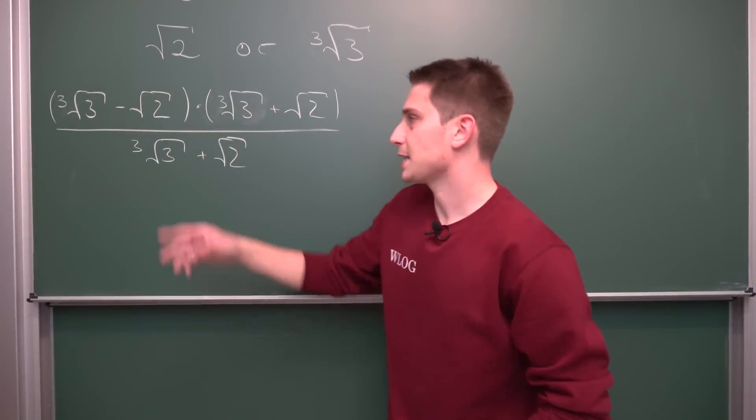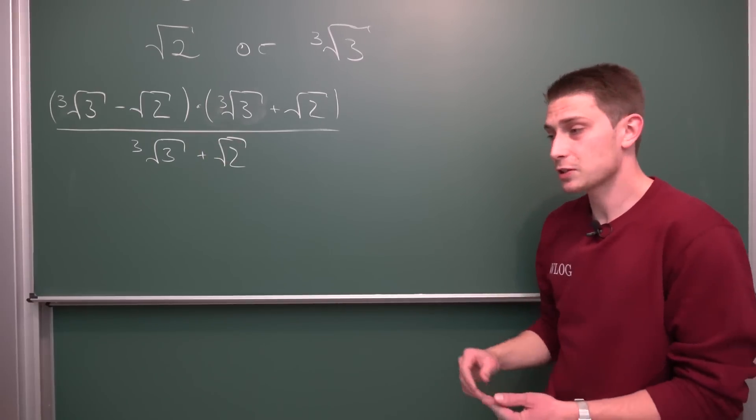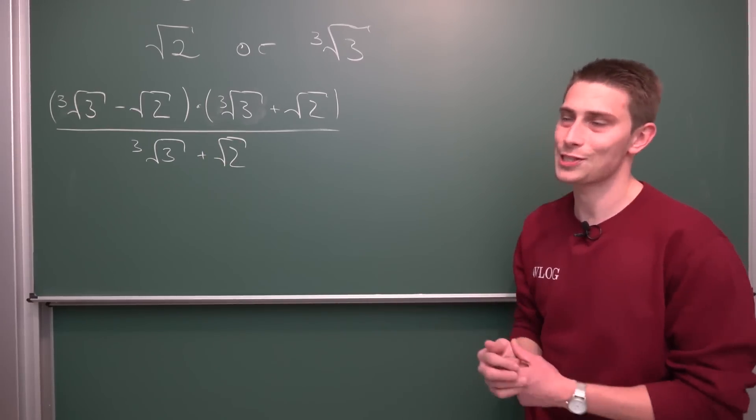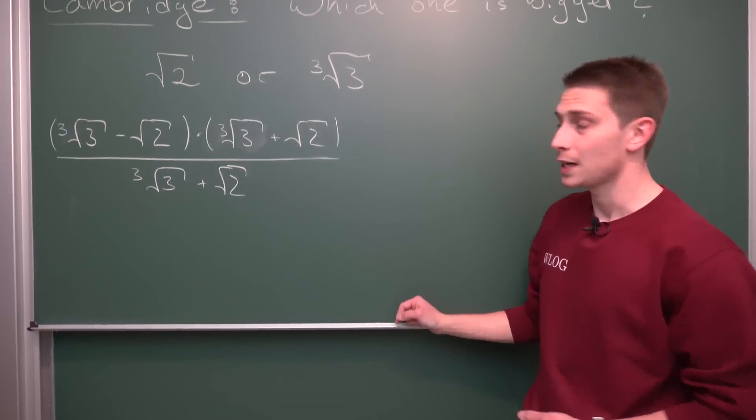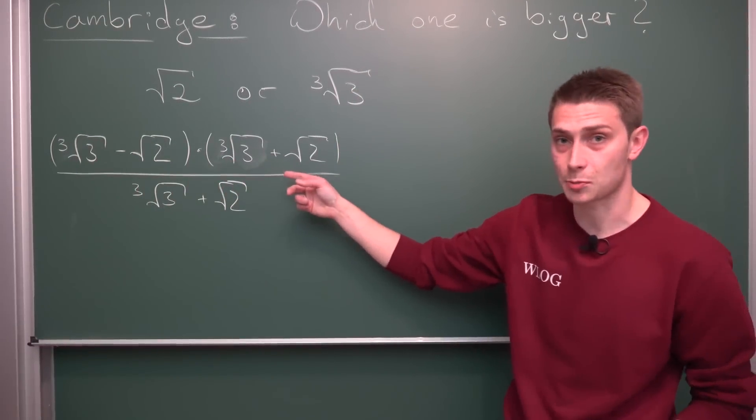We are going to multiply this by the cube root of 3 plus the square root of 2 divided by the very same thing. I hope you can see that we didn't change anything on the original difference. It's still the same. Now the very cool thing is that we got a difference of squares now. And difference of squares can make square roots disappear, which is our mission right here. Namely, we got something of the form a minus b times a plus b.